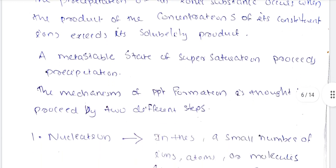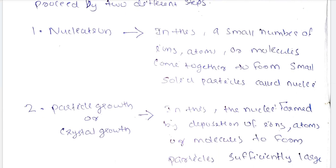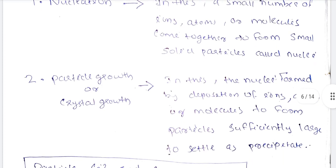A metastable state of supersaturation precedes precipitation. The mechanism of precipitate formation — PPT means precipitate — is thought to proceed by two different steps. The first step is nucleation, where a small number of ions, atoms, or molecules come together to form small solid particles called nuclei. The second step is particle growth or crystal growth, where the nuclei grow by deposition of ions or atoms to form particles large enough to settle out.